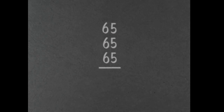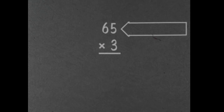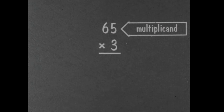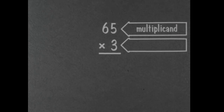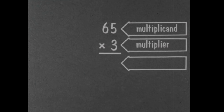A shorter way to find the sum of three equal addends is to multiply. This tells the size of each equal addend. Do you remember what this part is called? Multiplicand — that's right. And what is this part called? It tells how many equal addends. The multiplier. And what is the answer called in multiplication? Yes, the product.